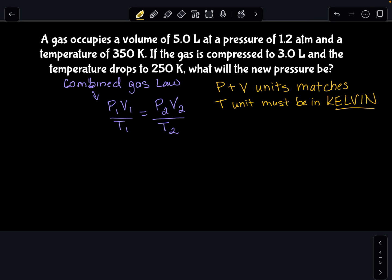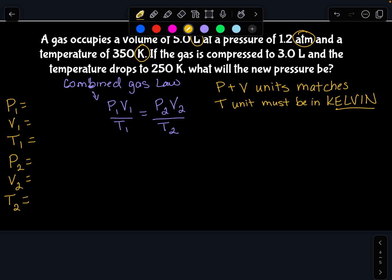So I'm looking at my problem, and I notice I have a volume unit in liters, a pressure unit in ATM, and a temperature unit in Kelvin. That tells me I have a combined gas law. So I'm going to write my combined gas law equation, and then I'm going to list all my variables. So I have P1, V1, T1, P2, V2, T2. I'm going to read my problem and start filling out these variables.